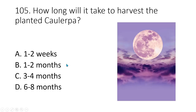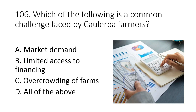Question 105. How long will it take to harvest the planted Caulerpa? A. One to two weeks B. One to two months C. Three to four months D. Six to eight months. The answer is B. One to two months.